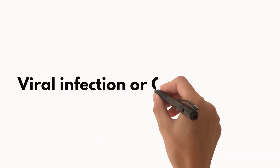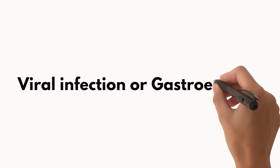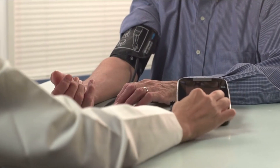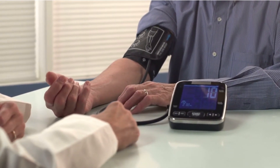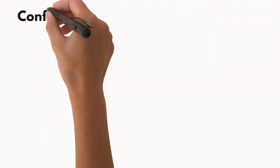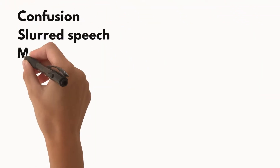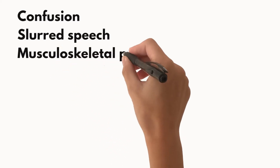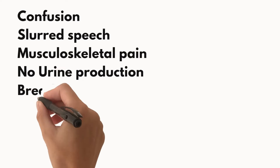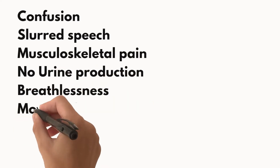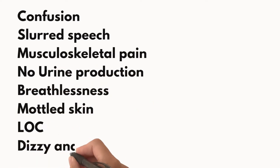Sometimes sepsis can actually be misdiagnosed as a viral infection or even gastroenteritis, and if misdiagnosed can lead the patient into potential septic shock. Symptoms of a person developing septic shock include confusion, disorientation, slurred speech, muscular pain, not urinating for 18 hours, breathlessness, mottled skin, loss of consciousness, and feeling dizzy or faint.